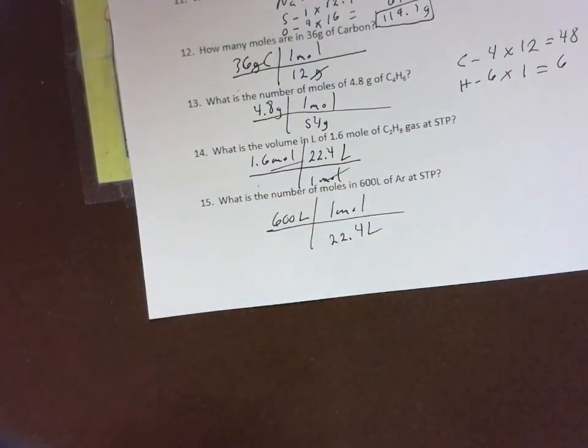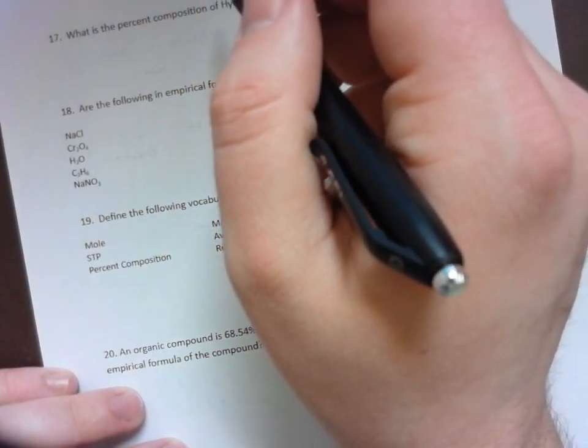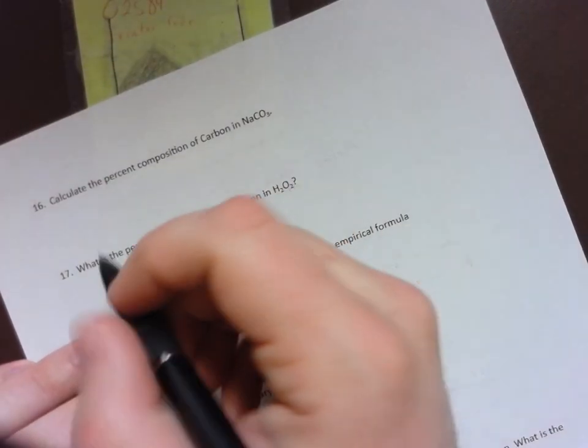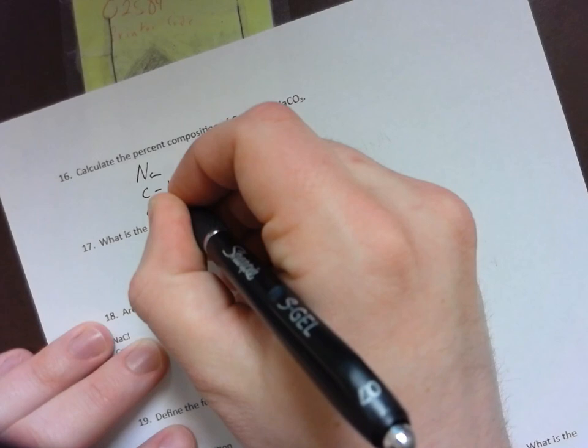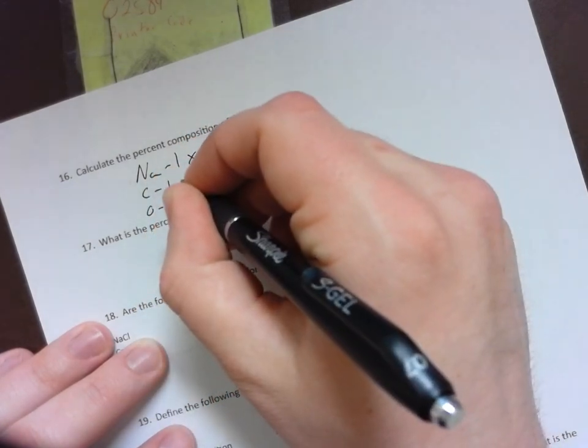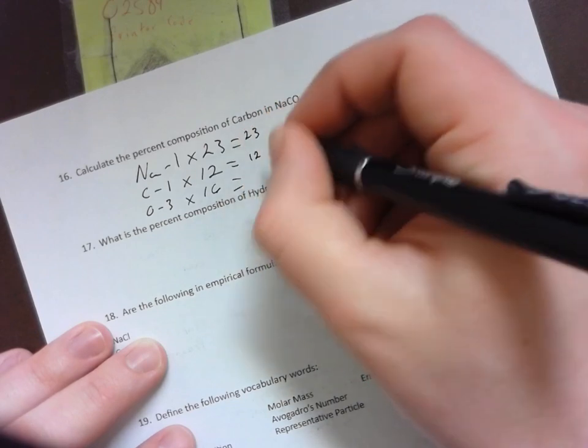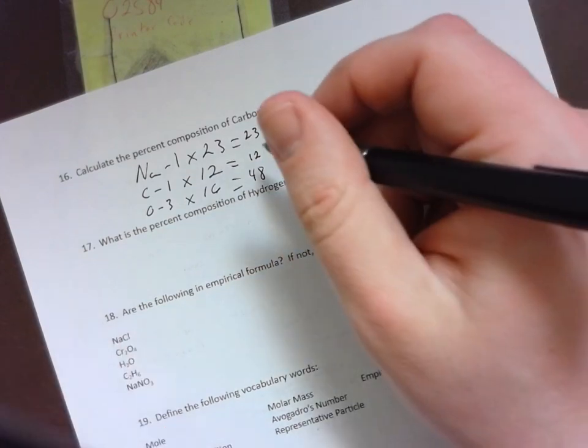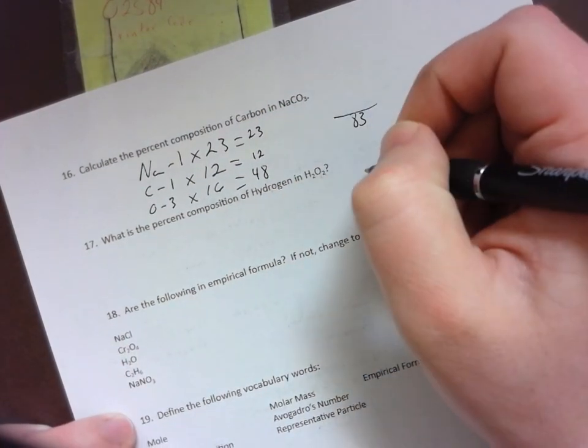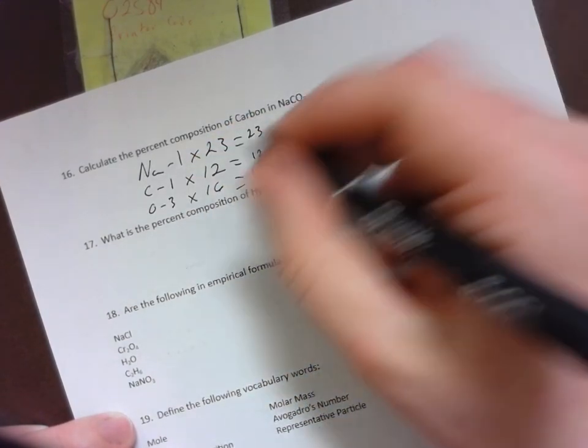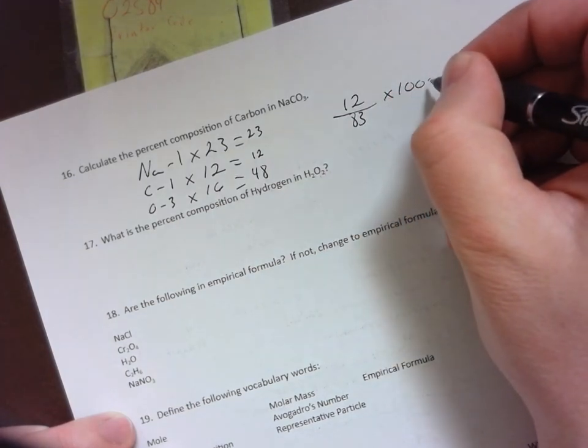Calculate the percent composition of carbon in Na2CO3. I have to find the total mass. Sodium is 23, carbon is 12, oxygen is 16, so 12, 23, and then 48, so we have 83 for our total. If I'm trying to figure out my carbon, I'm going to take 12 divided by 83 and then times 100 to figure out my percentage.